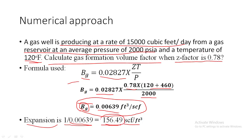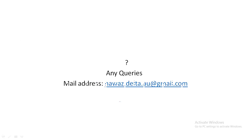Once you get a gas expansion factor of 156.49 SCF/ft³, it tells you that this particular cubic foot of gas has expanded into 156.49 standard cubic feet when it moves from reservoir to surface. I hope you understood everything in today's video. If you have any doubts, contact me at navas.delta.au@gmail.com. If you liked this video, please like, share, comment, and subscribe, and press the bell icon for latest notifications. Thank you and have a nice day!